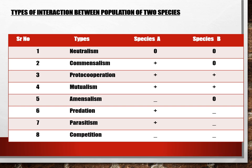In predation, one kills and consumes the other. The predator is positive and the prey is negative. In parasitism, the parasite is positive and the host is negative. In competition, a very important type of association which is very pronounced in humans, both species show a negative impact.